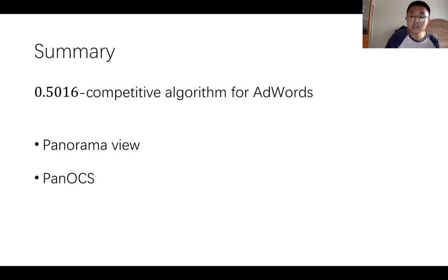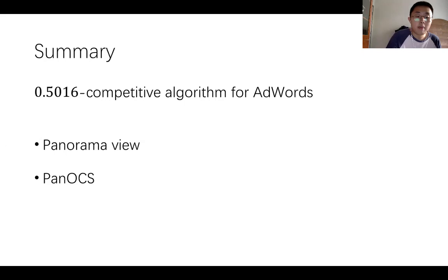Our algorithm achieves a 0.5016 competitive ratio for AdWords with general bids and without stochastic assumptions — this is the first algorithm beating the trivial greedy 0.5 barrier. For the techniques, we propose a novel panorama view for formulating AdWords, which allows a fine-grained characterization of how the assignment of an impression to an advertiser affects the marginal gains of the other impressions assigned to it. We generalize OCS in our panorama view as a pan-OCS, giving a quantitative control of negative correlations in different randomized rounds.